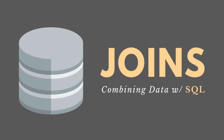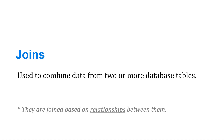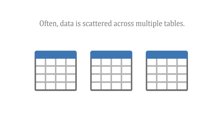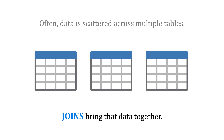Within SQL, we can use joins to combine data from two or more database tables, and those tables are joined based on some relationship between them. Oftentimes the data in our database is scattered across multiple tables, and when we query that data to answer some business question, we need data from more than one table. Joins help to bring that data together across multiple tables.